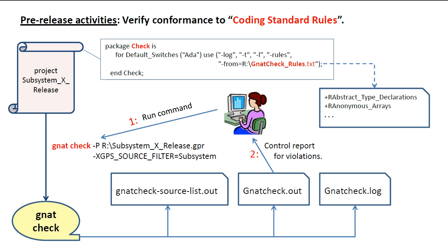Examples of coding violations that might appear in the report are things like exit statement with no loop name, use of equality operation for float values, anonymous array type, and so on. For those rare cases where a violation of a coding standard can be justified, the rationale for the rule exemption must be provided in the source code so that reviewers and maintainers can understand the reasoning behind the decision. Accepted violations, along with their justification, are documented in a special section of the generated report file.